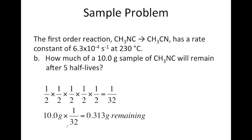For part B: how much of a 10-gram sample of CH₃NC will remain after 5 half-lives? After each half-life the amount is reduced by half, five times over. Multiplying (1/2)⁵ gives 1/32. So after 5 half-lives, 1/32 of the initial sample remains. Taking 10 grams divided by 32 gives 0.313 grams remaining.